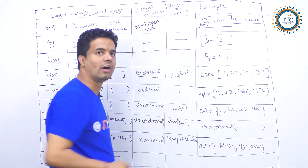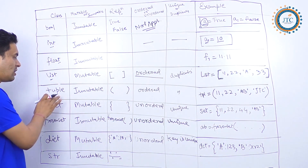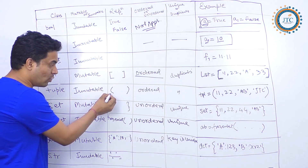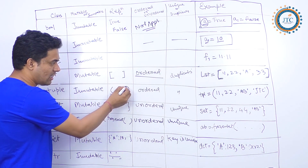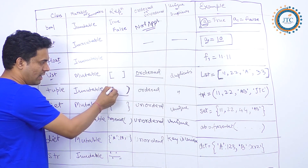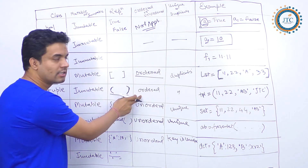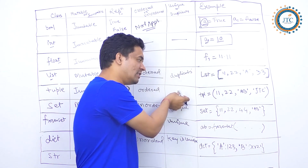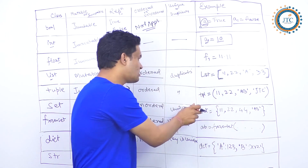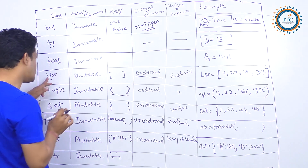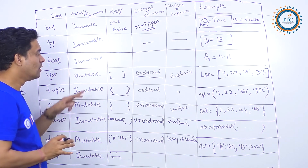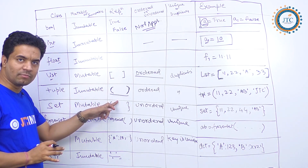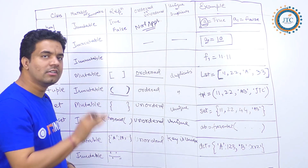A list is represented with square brackets. Next, tuple is immutable. You represent a tuple using parentheses. Tuple is also ordered and stores duplicates. The basic difference between list and tuple is: list is mutable, tuple is immutable, and their representations differ — otherwise most properties are the same.